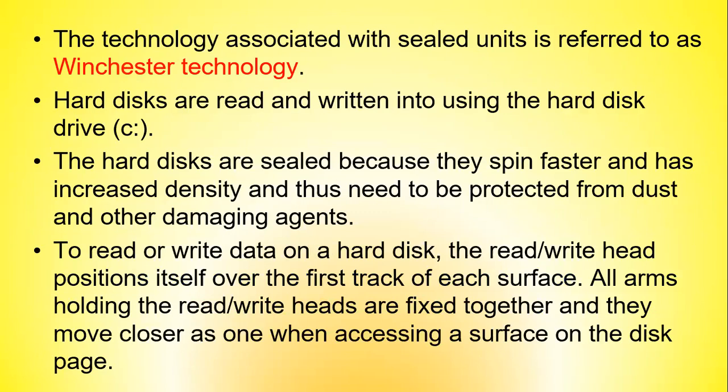Hard disks are referred to as Winchester disks because they are fixed in hermetically sealed disk units and have robust mechanical features; the technology associated with sealed units is referred to as Winchester technology. Hard disks are written to and read from using hard disk drives, normally abbreviated as C: for machines with a single hard disk. Hard disks are sealed because they spin faster and have increased density, and therefore need to be protected from dust and other damaging agents.